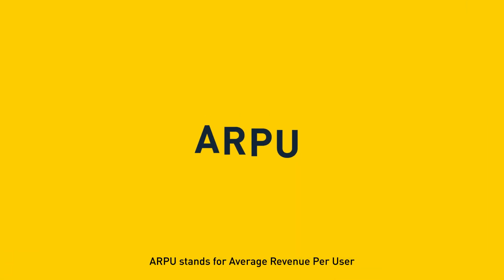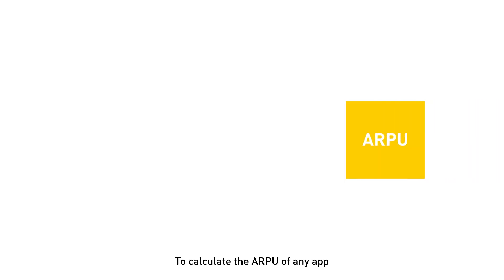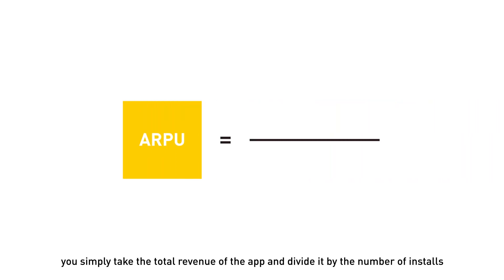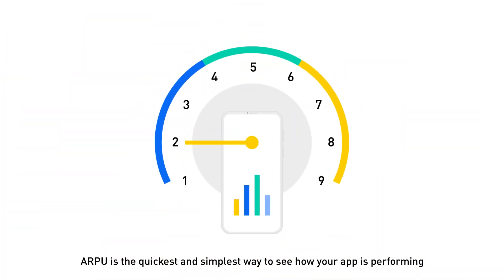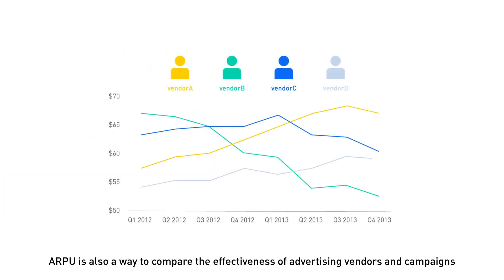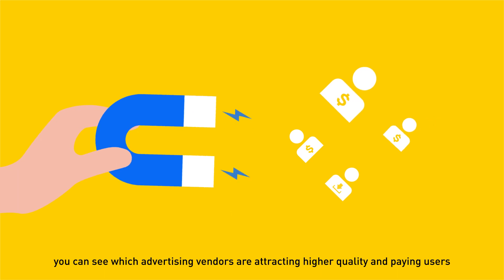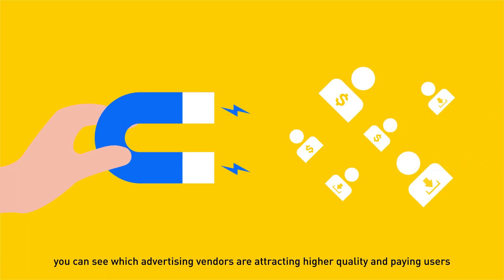ARPU stands for Average Revenue Per User. To calculate the ARPU of any app, you simply take the total revenue of the app and divide it by the number of installs. ARPU is the quickest and simplest way to see how your app is performing. ARPU is also a way to compare the effectiveness of advertising vendors and campaigns — by comparing the ARPU, you can see which advertising vendors are attracting higher-quality and paying users.